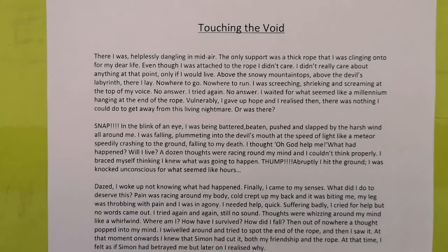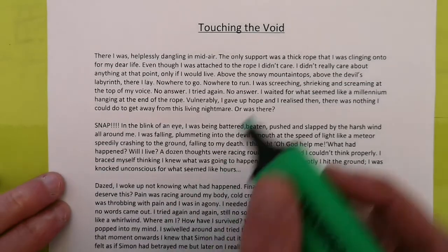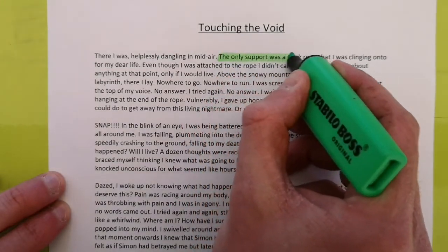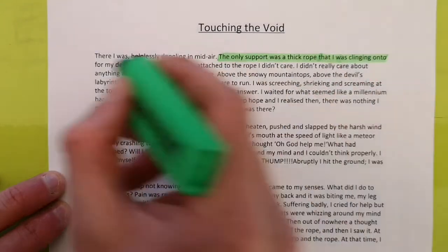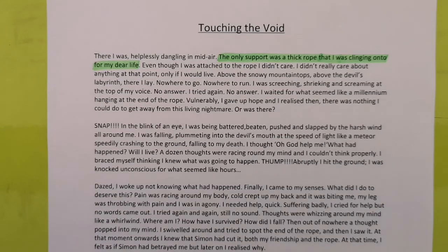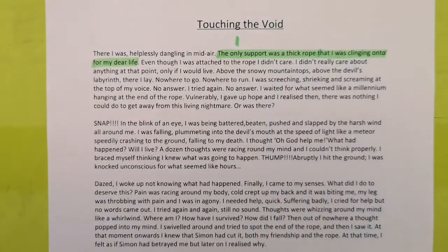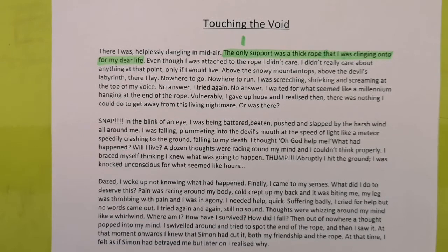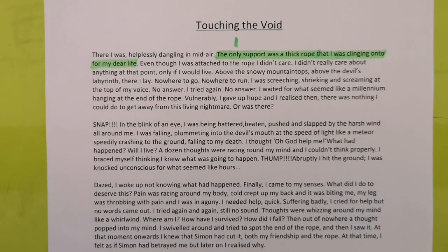One of the things that the author does is he uses the adverb only. So if you look there, he says, the only support was the thick rope that I was clinging on for dear life. And that suggests to the reader that he's only got one option, and that's that rope. The only thing that's saving him from falling to his death is that one rope. So that really good use there of that only adverb gives the reader a sense that he is really, really in trouble at this point.